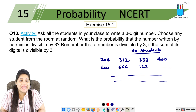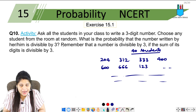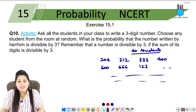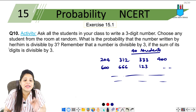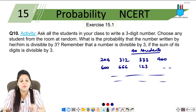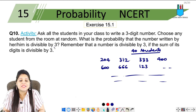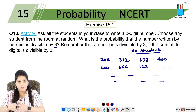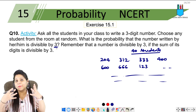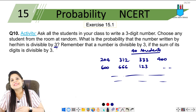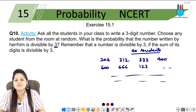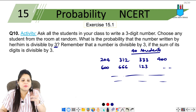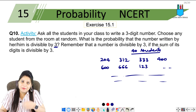Choose any student from the room at random. If someone has been chosen, what is the probability that the number written by her or him is divisible by 3? Remember that a number is divisible by 3 if the sum of its digits is divisible by 3.